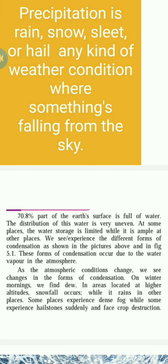70.8% of Earth's surface is full of water. The distribution of this water is very uneven. At some places the water storage is limited, while it is ample at other places. We see or experience different forms of condensation as shown in figure 5.1. These forms of condensation occur due to water vapor in the atmosphere.